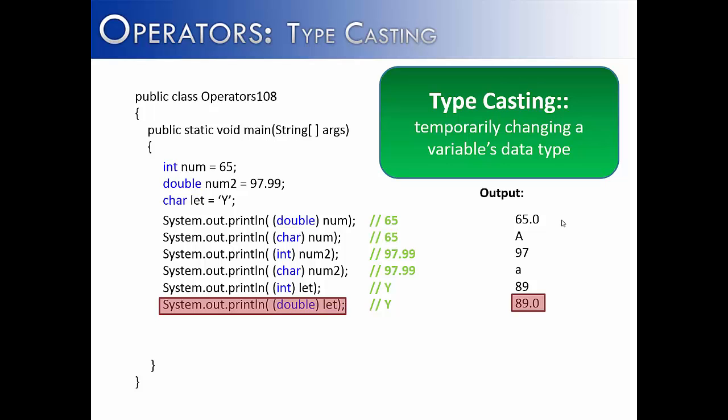It's important to note here that the changes I've made to num, num2, and let are not permanent. The only change that has been made is on each System.out.println line. Once that System.out.println line has run, num is still an int, num2 is still a double, and let is still a character.